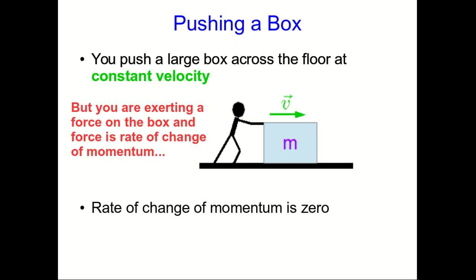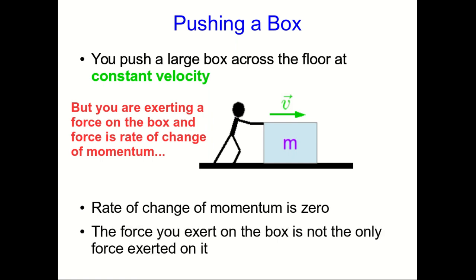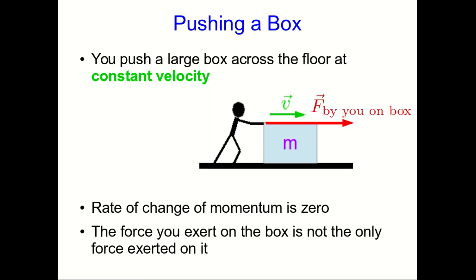But you are exerting a force on the box, and we've defined force as the rate of change of momentum. The reason this can happen is that the force you are exerting on the box isn't the only force exerted on it. So you're pushing forward on the box, but the box is also interacting with the floor. And you probably know if you think about it for a moment that there will be a frictional force back on the box due to the floor.